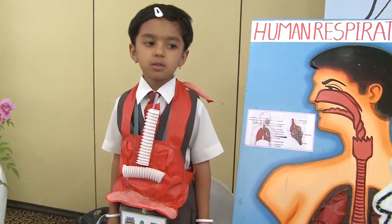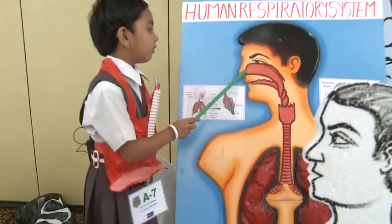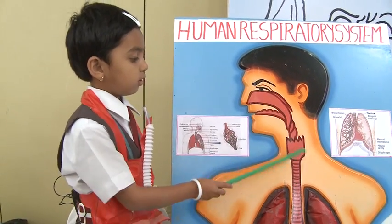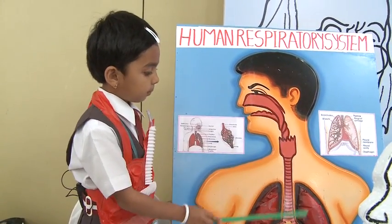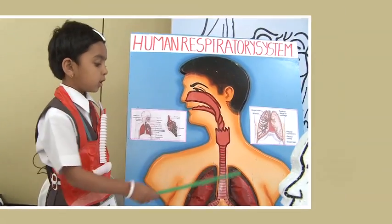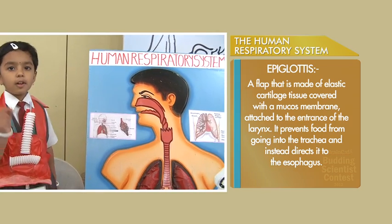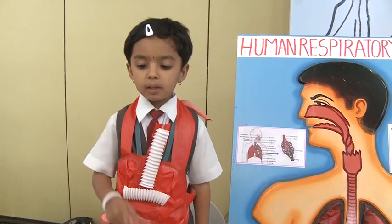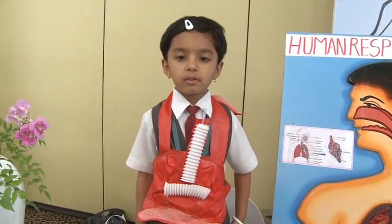Air passes through the nasal cavity. From the nasal cavity, air enters into the throat and then enters into an opening, previously called glottis. The glottis gets covered by a small flap-like structure called epiglottis, which prevents the entry of food into the windpipe.